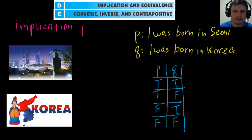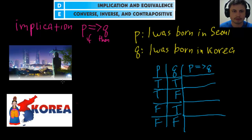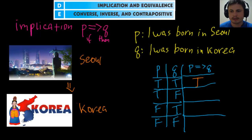For implication — if P then Q — let's fill in the truth table. Possibility one: if I was born in Seoul, then I was born in Korea. That's logical since Seoul is in Korea, so this is true. Possibility two: I was born in Seoul but not in Korea. That makes no sense, so this is false.